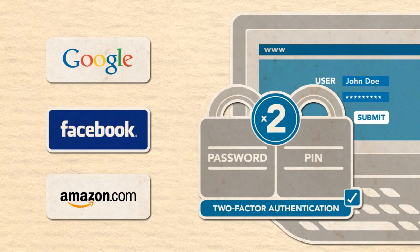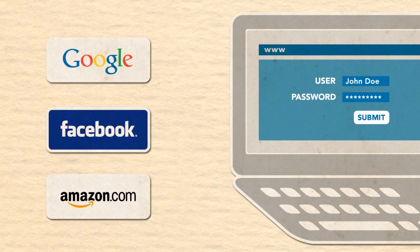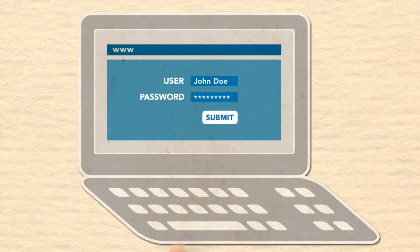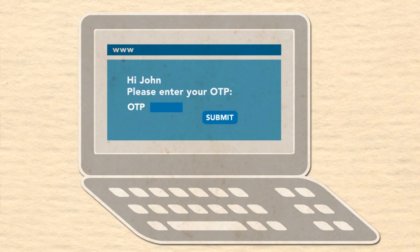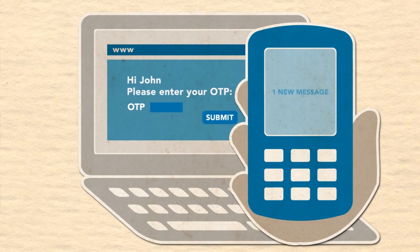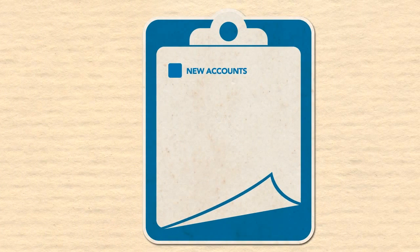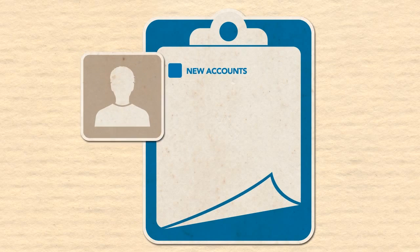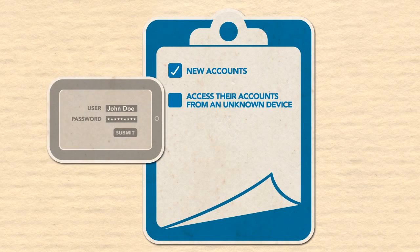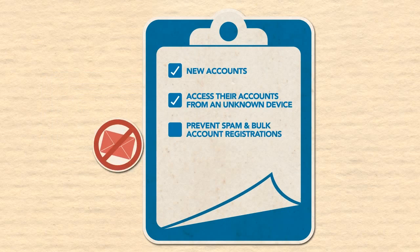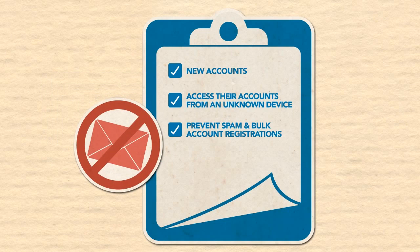Two-factor authentication is the process of authenticating a user's identity using two different methods or factors. The first factor is something the user knows, such as a password. The second factor is something the user has, such as a unique one-time PIN sent to their user's mobile phone. You should use two-factor authentication when users create new accounts, access their accounts from an unknown device, and to prevent spam and bulk account registrations.